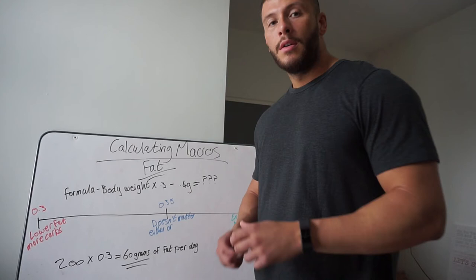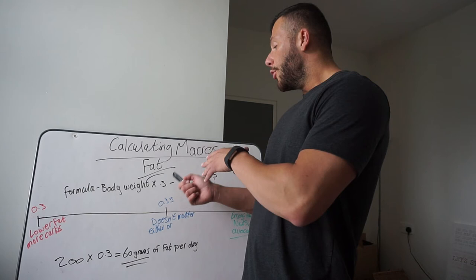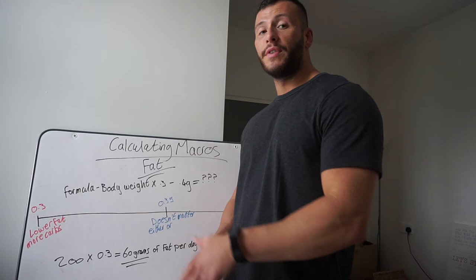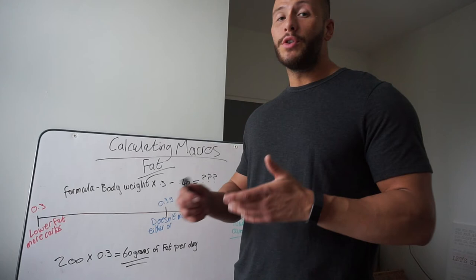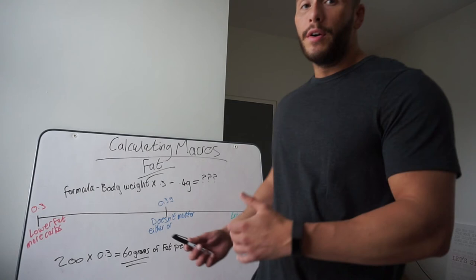The formula we're going to use again is our body weight multiplied between 0.3 and 0.4. This scale, 0.3 will be for an individual who likes a lower fat or a high carb diet. 0.35 would be for somebody who doesn't really matter where they get the energy from, there's no real preference between carbs or fats. And then 0.4, that would be for somebody who enjoys a lower carb diet but enjoys foods such as nuts, seeds, and avocado.